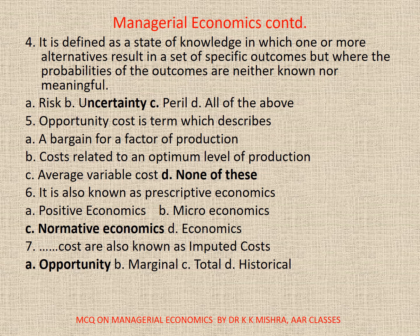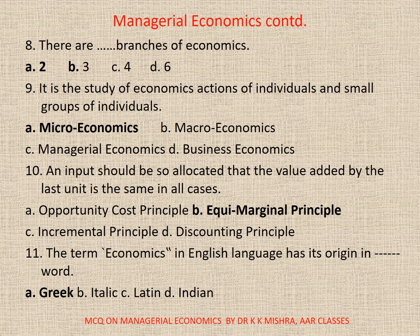Question 6: It is also known as prescriptive economics. A. positive economics, B. microeconomics, C. normative economics, or D. economics. Correct option is C: normative economics. Question 7: Dash costs are also known as imputed costs. A. opportunity, B. marginal, C. total, or D. historical. Correct option is A: opportunity. Question 8: There are dash branches of economics. The correct option is A: two. Question 9: It is the study of economic actions of individuals and small groups of individuals. A. microeconomics, B. macroeconomics, C. managerial economics, or D. business economics. Correct option is A: microeconomics. Question 10: An input should be so allocated that the value added by the last unit is the same in all cases. A. opportunity cost principle, B. equi-marginal principle, C. incremental principle, or D. discounting principle. Correct option is B: equi-marginal principle.